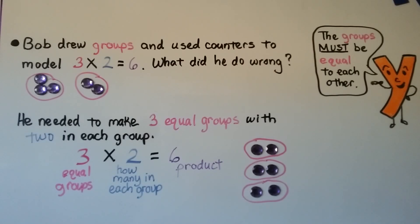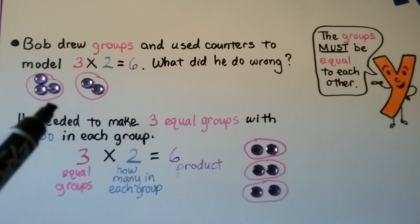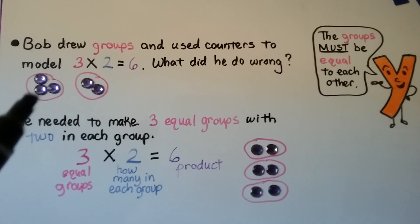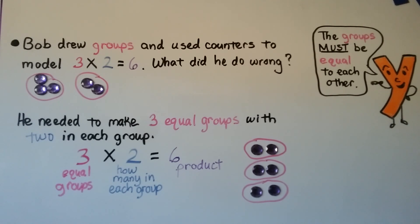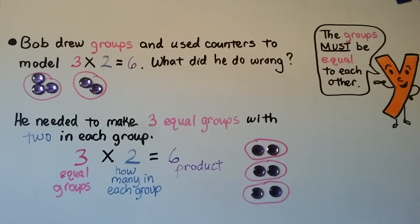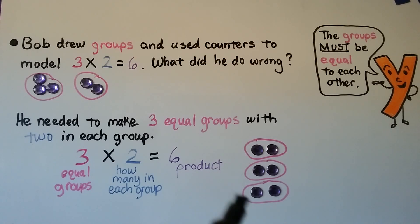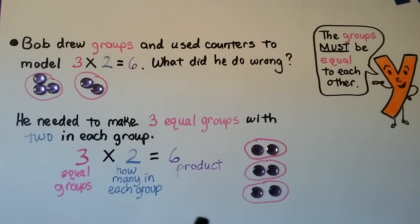Bob drew groups and used counters to model three times two is equal to six. What did he do wrong? He needed to make three equal groups with two in each group. This is not three times two because the groups must be equal to each other — they must have the same amount in them.